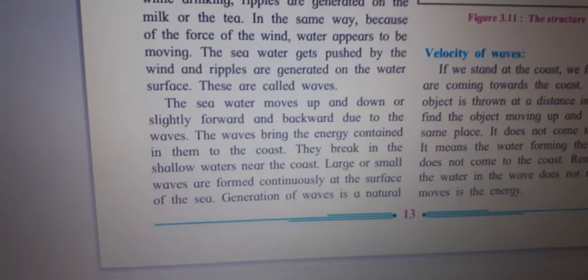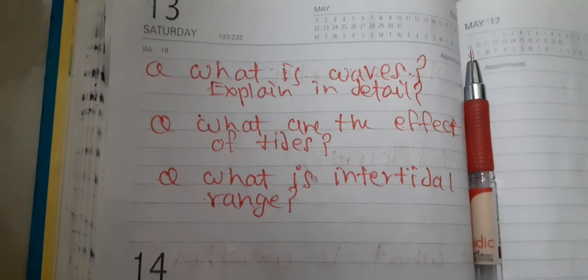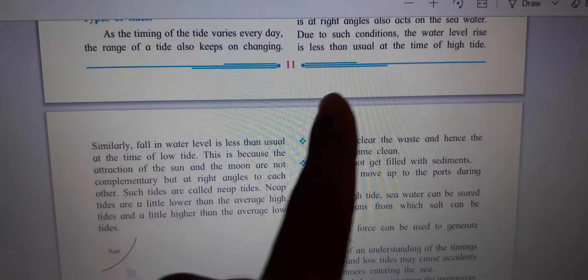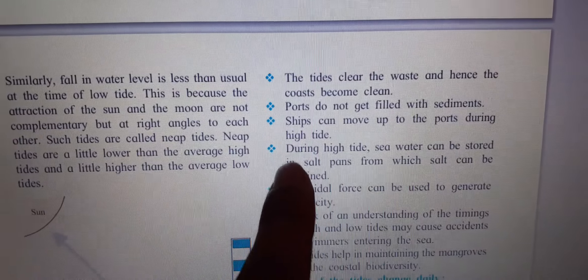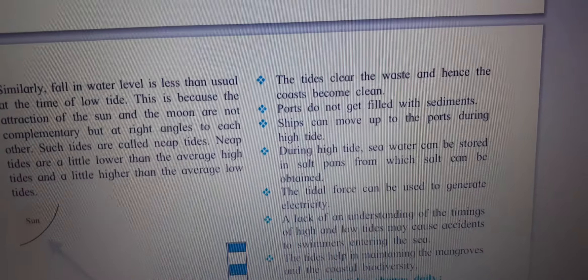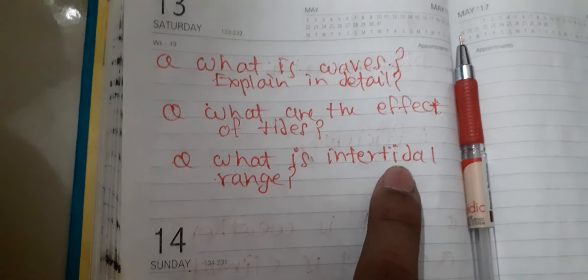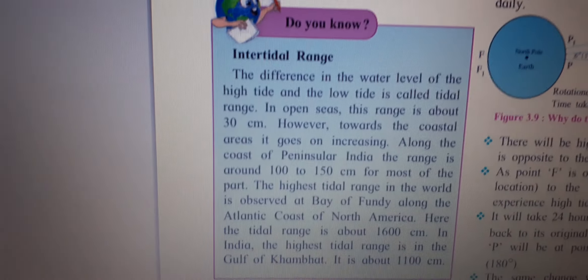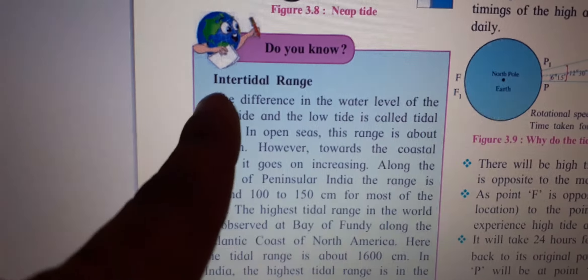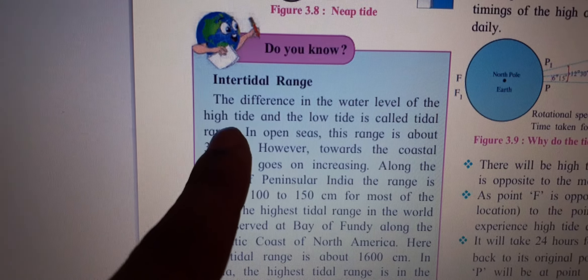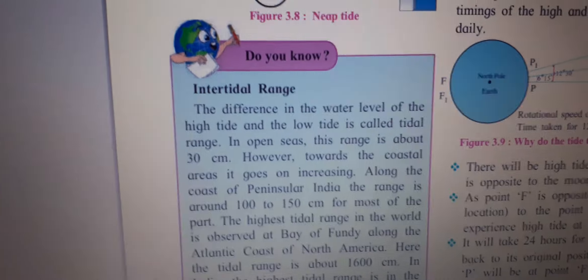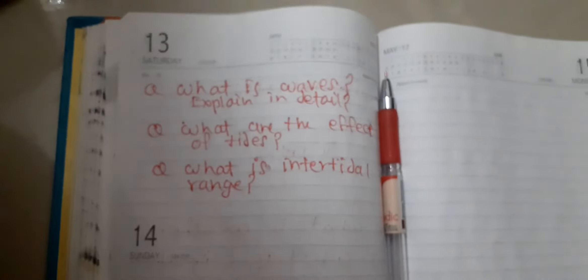You have to write the answer for the question on effects of tides — there are six points in total. Next question: what is intertidal range? Is this clear? If any doubt, please ask. You need to write the answers for these three questions. If any doubt, please ask. Thank you, have a great day.